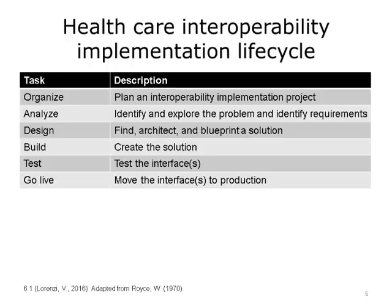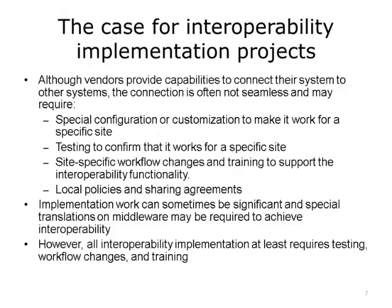In the life cycle, you begin with project planning, then you explore the problem and discover its detailed requirements, then you determine the best way to solve it, you build the solution, you test the solution, and you carefully and methodically put your solution into production. These steps should be included in a project plan when implementing interoperability, because skipping steps can lead to problems in production that could create financial costs and compromise patient care. You should expect to have to go back a step or to repeat steps. Although vendors provide capabilities to connect their systems to other systems, the connection is often not seamless and may require special configuration or customization to make it work for a specific site. Testing to confirm that it works for a specific site, site-specific workflow changes and training to support the interoperability functionality, and local policies and sharing agreements are all important considerations.